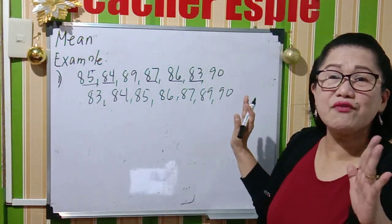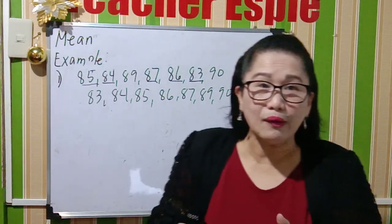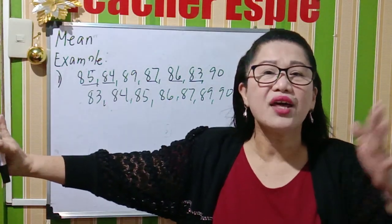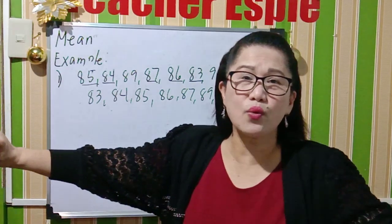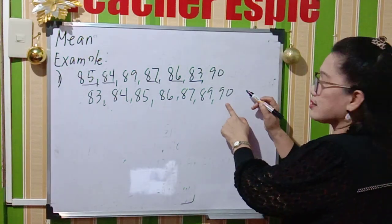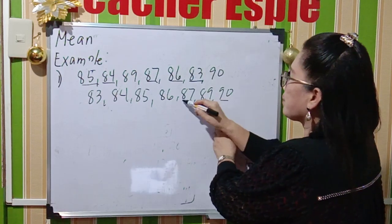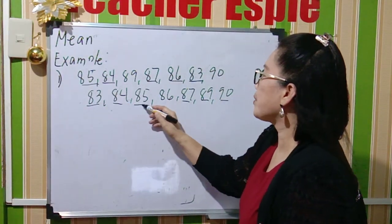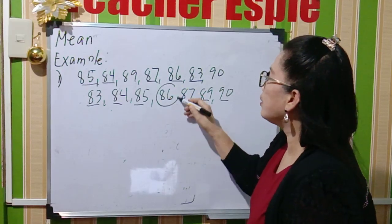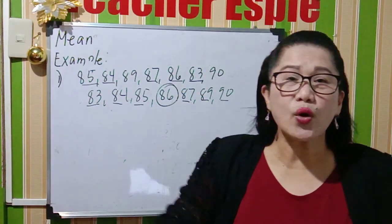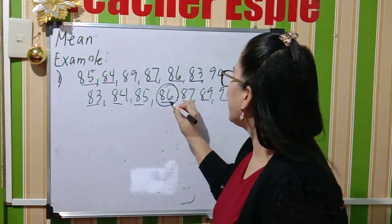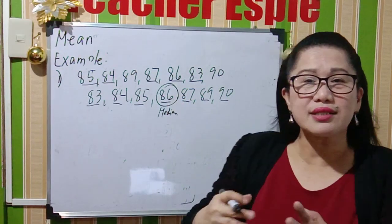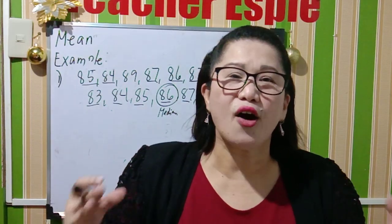Since there are 7 values, half of that means 3 from the right side and 3 from the left side. So you start from the right side: 1, 2, 3, and from the left side: 1, 2, 3. Therefore the middle term is 86, and this is now our median.